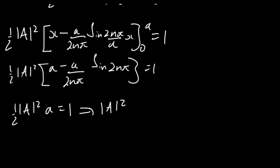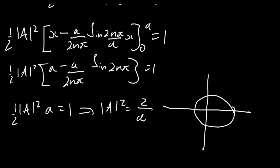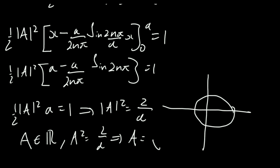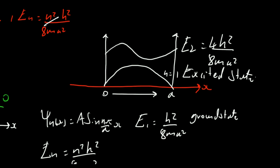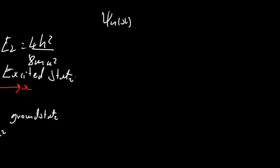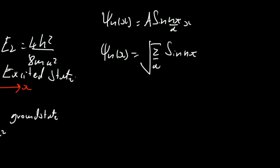This simplifies to one half mod A squared times a equals one, giving mod A squared equals 2 over a. We may as well choose A to be real and positive, so A equals the square root of 2 over a. Our normalized wave function is therefore psi n of x equals the square root of 2 over a times sine of n pi over a times x.